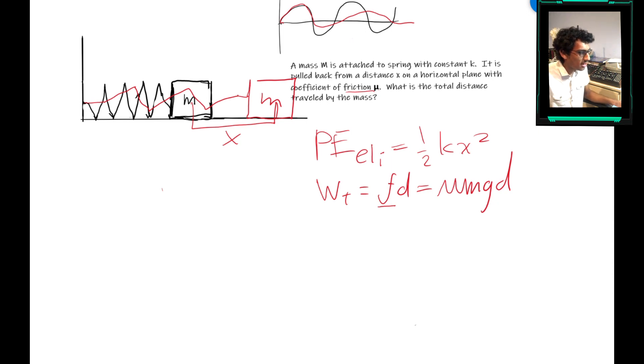And so the mass is not going to reach its equilibrium point because of friction. I'll draw here, it would end up somewhere short of the equilibrium point, and we'll call the distance it is away x2.